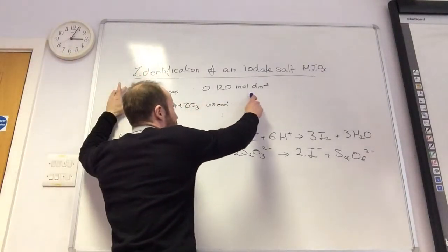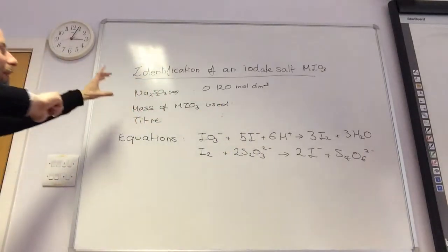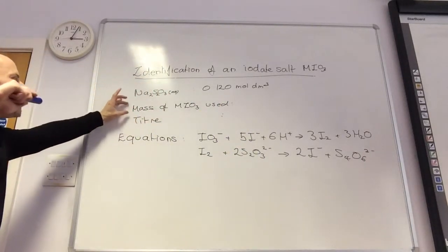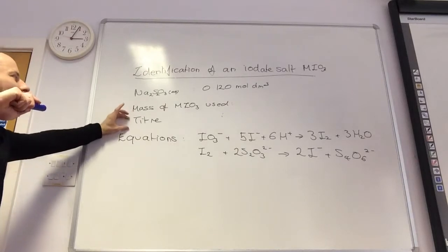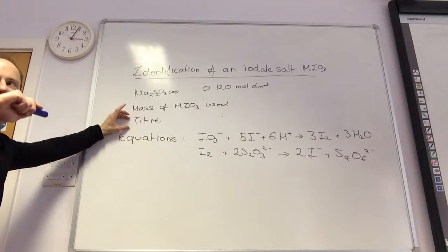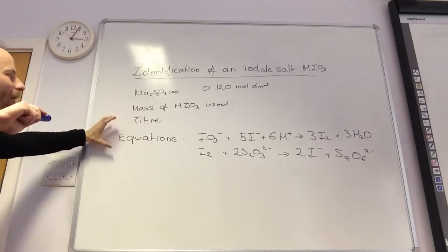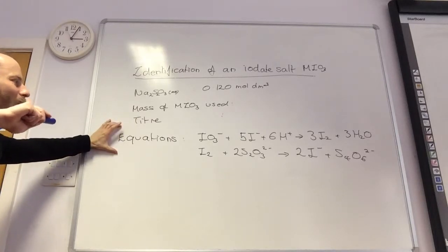The concentration of the sodium thiosulfate is 0.120 moles per decimeter cubed. I am now going to work out the mass of salt that I use, and we're going to work out a titre. So we're going to go to the practical now, and then we'll come back to the equations.